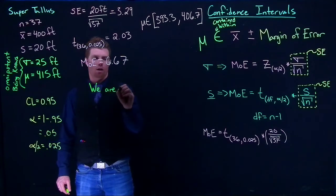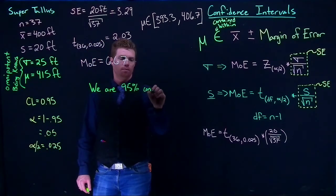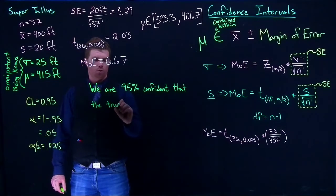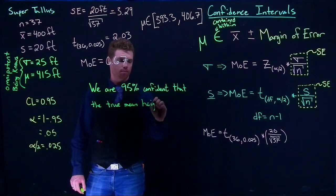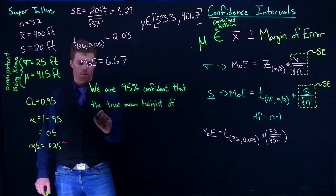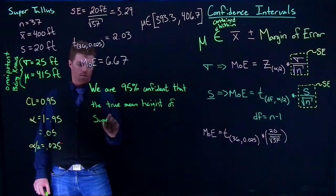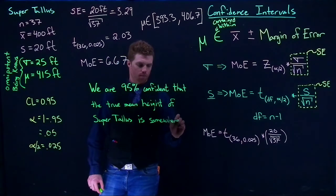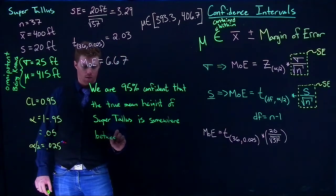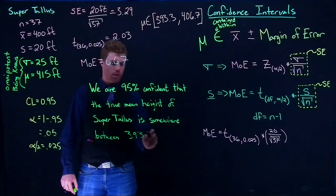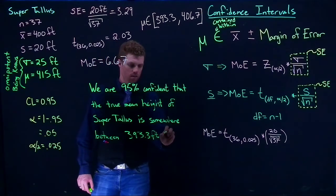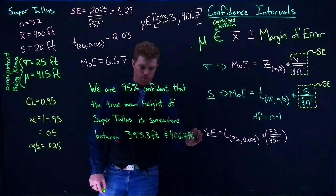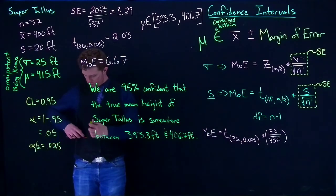So what we can say is that we are 95% confident that the true mean height of Super Tallest is somewhere between 393 feet and 406 feet. And there is our confidence interval statement.